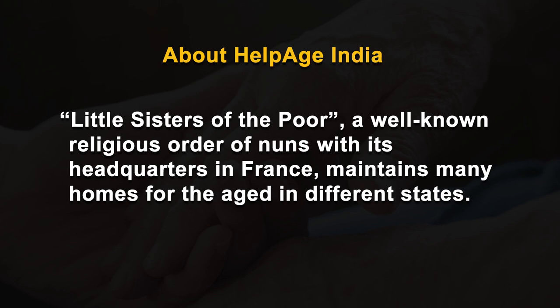Initially, day centres for the elderly in India were set up during 1979-80 by Centre for the Welfare of the Aged in Chennai, Family Welfare Agency in Mumbai and Association for the Care of the Aged in Hyderabad. The role of the state in organizing welfare programs for the elderly is marginal, though some homes for the elderly in India are maintained under the auspices of religious bodies and voluntary organizations. The Christian missionaries, particularly those belonging to the Catholic denomination, have been responsible for starting a large number of homes for the aged. Little Sisters of the Poor, a well-known religious order of nuns with its headquarters in France, maintains many homes for the aged in different states. Hindu religious and secular groups are also starting residential care programs for the elderly.